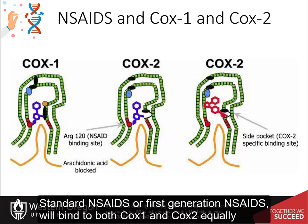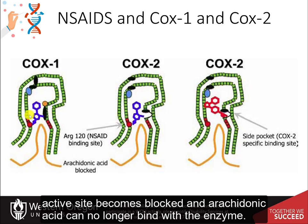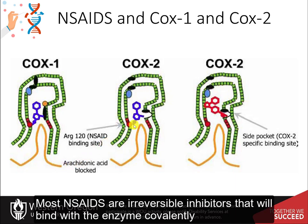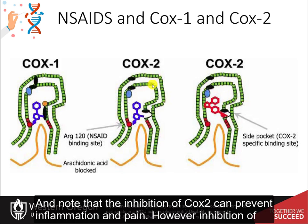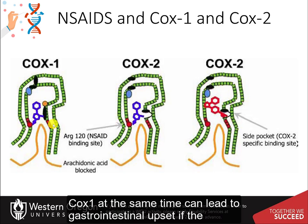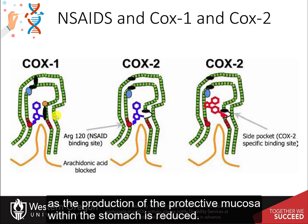Standard NSAIDs, or first-generation NSAIDs, will bind to both COX-1 and COX-2 equally — essentially, the active site becomes blocked and arachidonic acid can no longer bind with the enzyme. Most NSAIDs are irreversible inhibitors that will bind covalently and permanently block the activity. Inhibition of COX-2 can prevent inflammation and pain; however, inhibition of COX-1 at the same time can lead to gastrointestinal upset if the NSAIDs are taken for long periods of time. In fact, they can lead to the formation of ulcers, as production of the protective mucosa within the stomach is reduced.